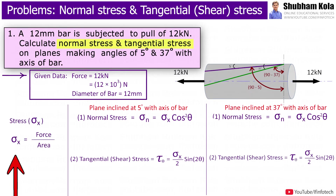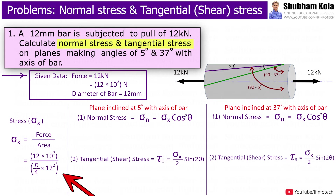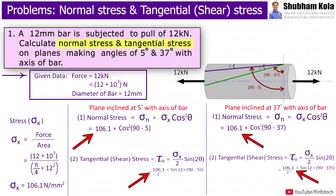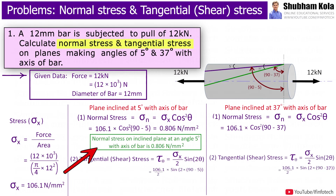The stress σx is force divided by area, where force is 12 kN divided by area (π/4)·d², with d = 12 mm. So the stress σx is calculated as 106.1 N/mm². Putting the value of σx, the normal stress on the inclined plane at an angle of 5° with the axis of the bar is 0.816 N/mm².